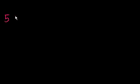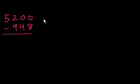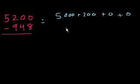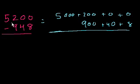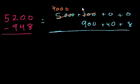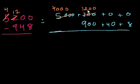Let's do 5,200 minus 948. That equals 5,000 plus 200 plus 0 tens plus 0 ones. The bottom number is 900 plus 40 plus 8. We're going to need to borrow in the hundreds, tens, and ones place, because all of those numbers below are bigger than the ones above. So let's take 1,000 from the 5,000 — we have 4,000 left — and put it into the hundreds place. So 1,000 plus 200 is 1,200. In place notation, the 5,000 becomes 4,000 and the 200 becomes 1,200.